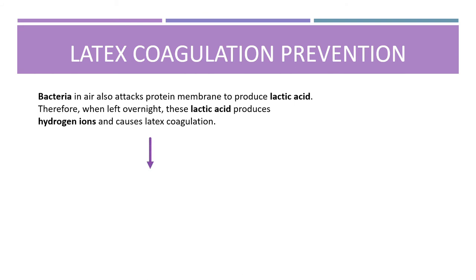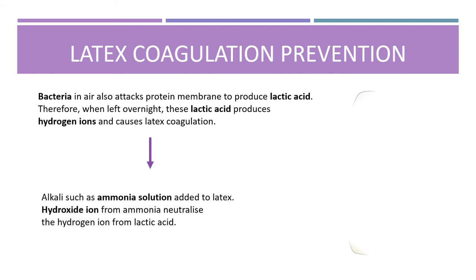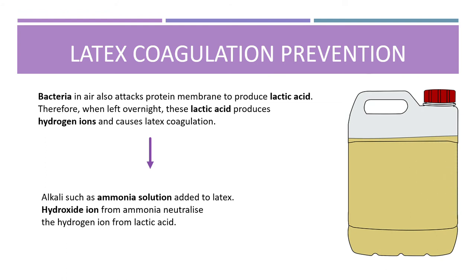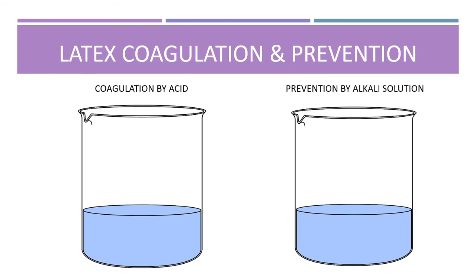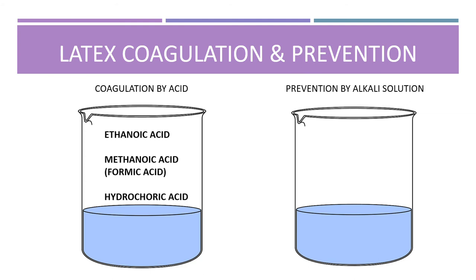This coagulation can be prevented by adding ammonia solution, because the hydroxide ions from ammonia neutralize the hydrogen ions from the lactic acid. Several types of acid lead to latex coagulation, such as ethanoic acid, methanoic acid (also known as formic acid) and hydrochloric acid. Prevention of latex coagulation can be achieved using alkali solutions such as ammonia, sodium hydroxide and potassium hydroxide.